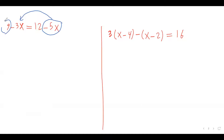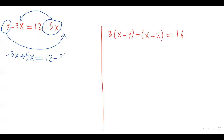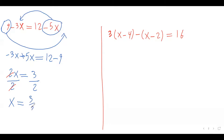I want to move this constant term to the other side as well. On the left side I have negative 3x. If I move negative 5x from the right side to the left side, it becomes positive 5x. On the right side I have the constant term 12. Then I move the 9 to the right side — it's positive 9, so it becomes negative 9. Combining like terms: negative 3x plus 5x is positive 2x, equals 12 minus 9, which is 3. So 2x equals 3. I have to isolate x — the coefficient is 2, so I divide both sides by 2. This 2 cancels that 2, giving x equals 3 over 2. This is our answer.